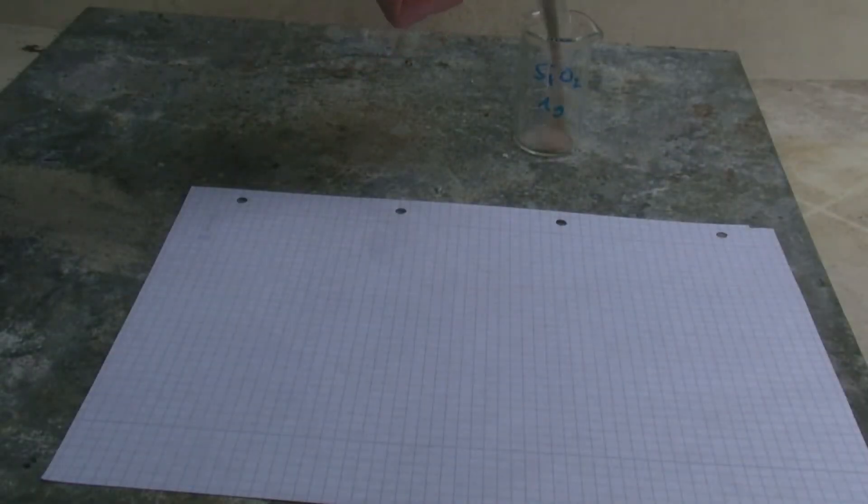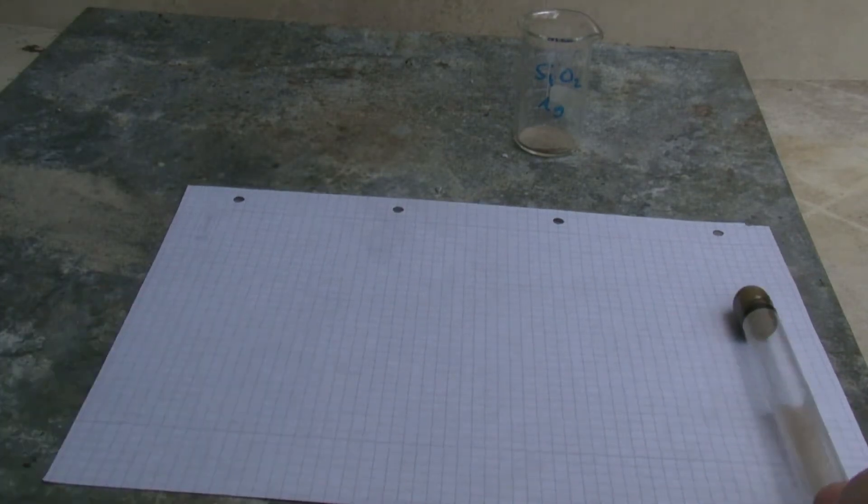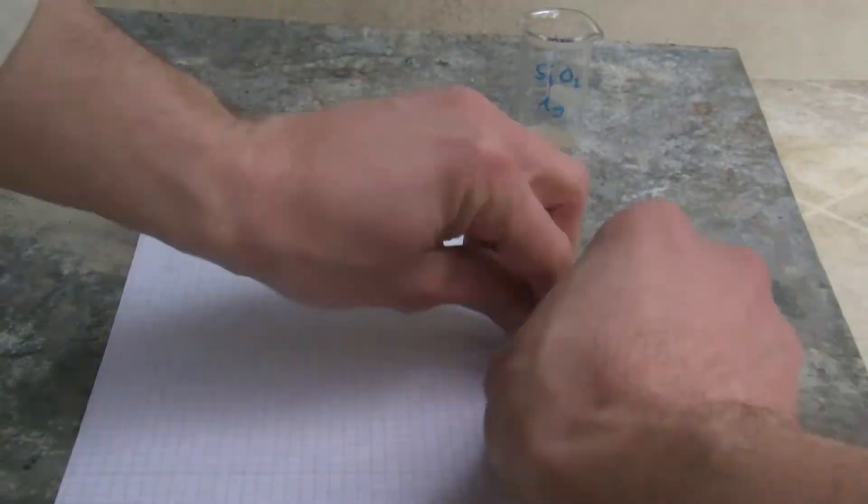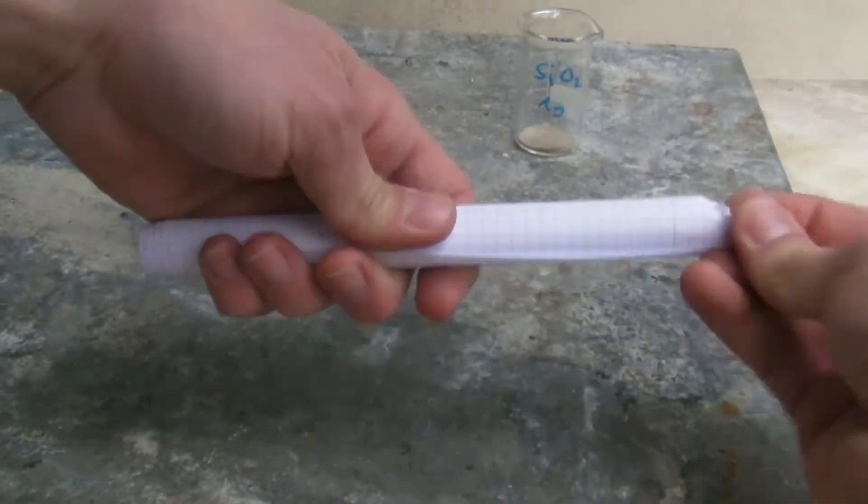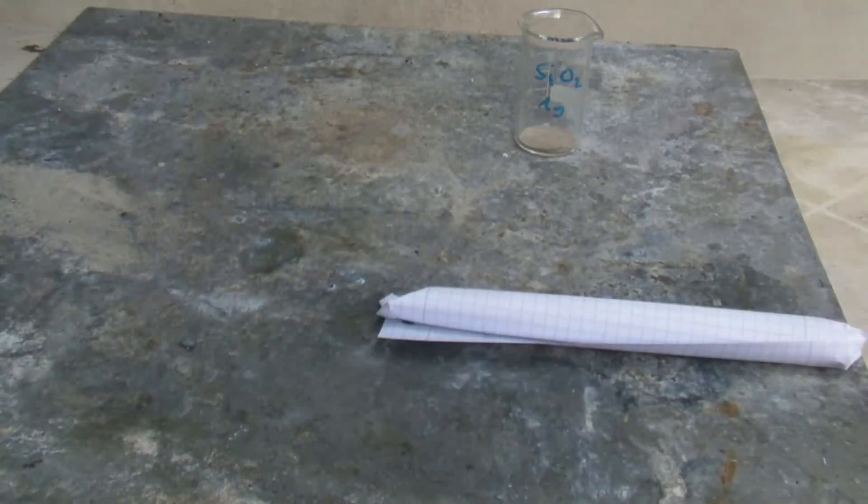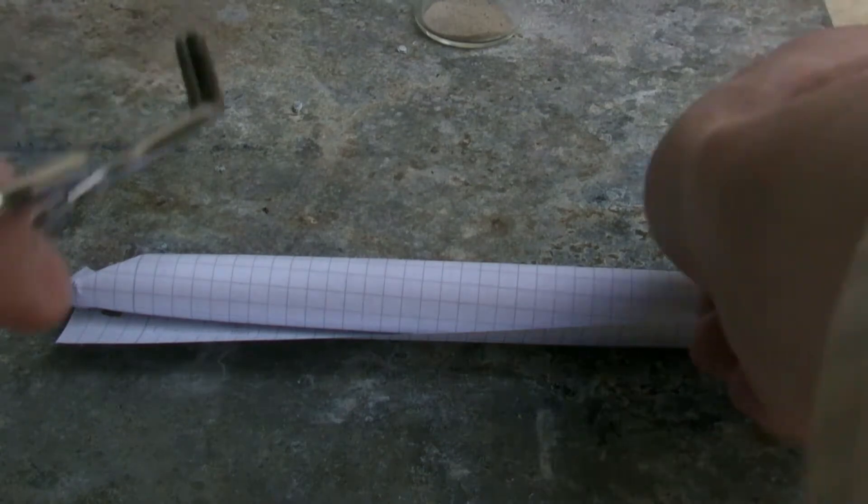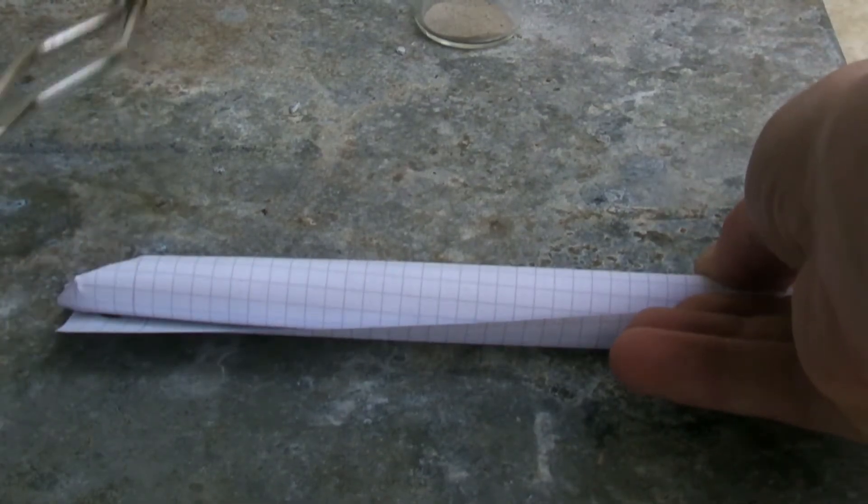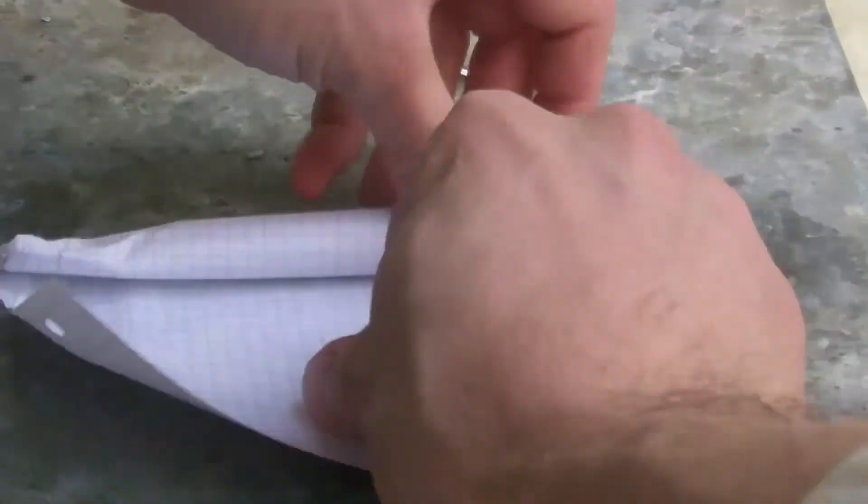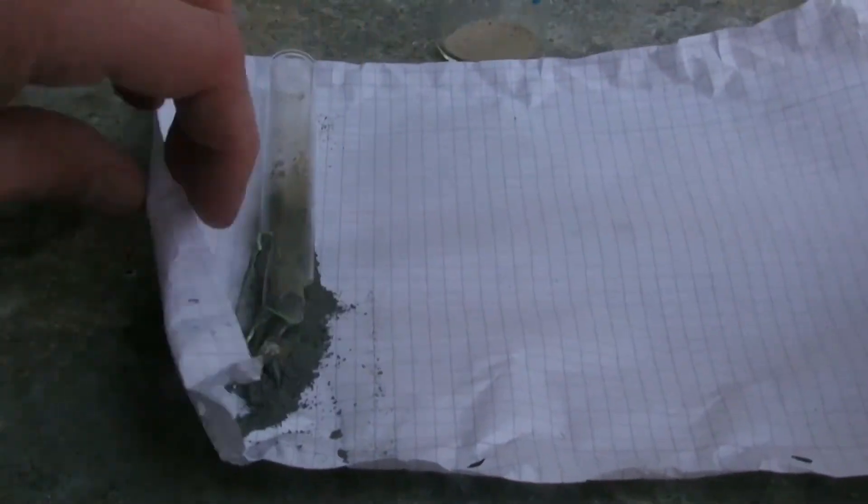Next the excess sand is dumped out and the test tube is wrapped in a sheet of paper so that the ends can be folded. Now the tube is broken at the end with a product. After that the paper just has to be unrolled and the shards can be removed manually.